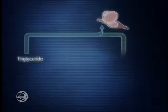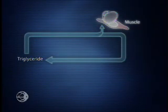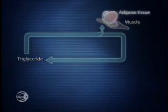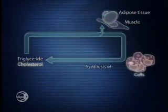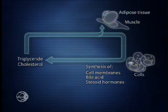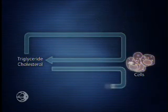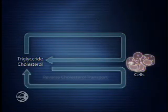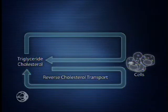This system cycles triglycerides for distribution to muscle for energy use, or to adipose tissue for storage, and it cycles cholesterol for distribution throughout the body for cell membrane, bile acid, and steroid hormone synthesis. A complementary cycle, called reverse cholesterol transport, completes the system.